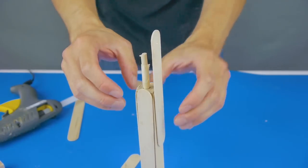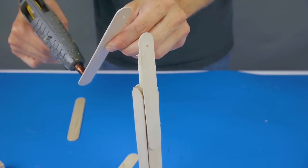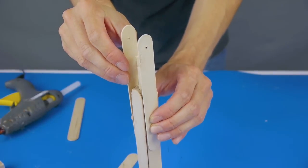Begin creating the hinge for the fighting arm stem by gluing on two craft sticks with holes as shown. Make sure that the holes are aligned with each other.